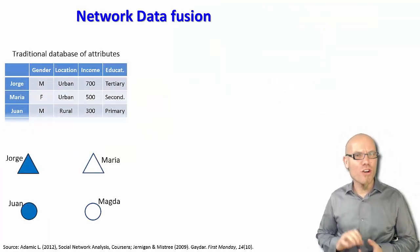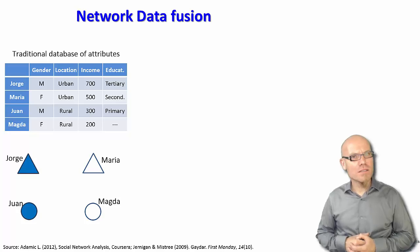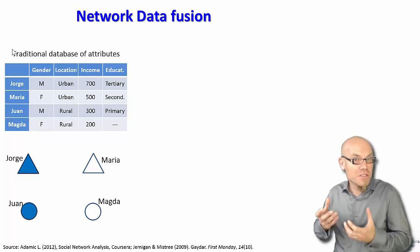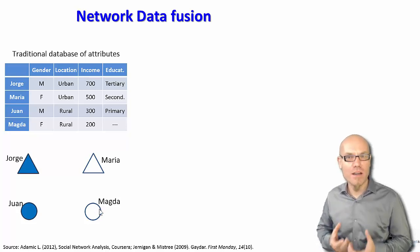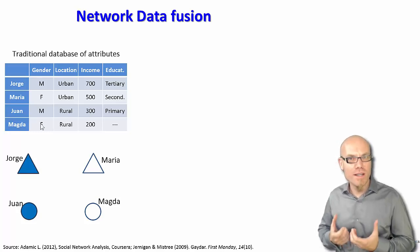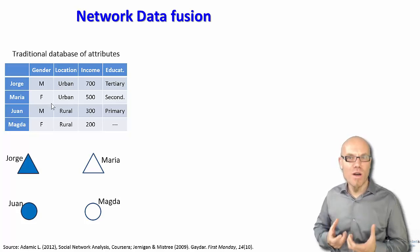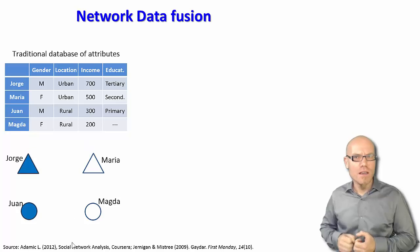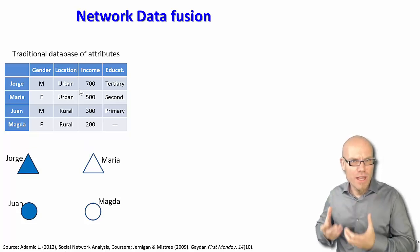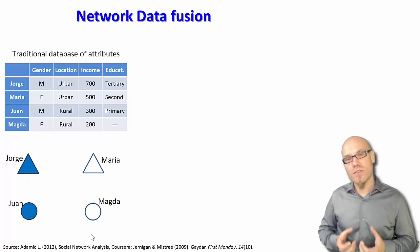One important example of the complementary nature of different data sources is network analysis — in our case, social network analysis. In social network analysis you always have two different kinds of databases. You have the traditional database used in traditional statistics, basically describing the attributes of people. So you have Jorge, Maria, Juan, and Magda — you know that Jorge is male, Maria is female, Juan is male, Magda is female; Jorge and Maria are urban (shown as triangles), Juan and Magda live in a rural area (shown as circles) — and so forth. You can then create statistics about average income, percentages of male and female, rural and urban, and so on. This is traditional statistics.